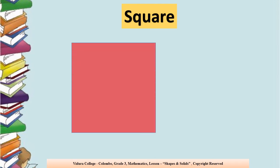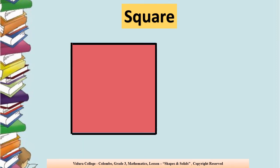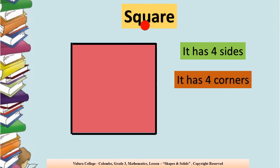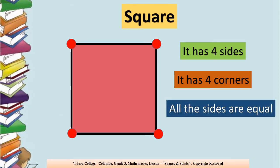First we'll take the shape of a square. Do you all know that there are four sides in the square? We'll count: one, two, three, four. There are four sides. And how many corners? There are four corners: one, two, three, four. Another special thing is all the sides are equal — see, all the sides are equal.